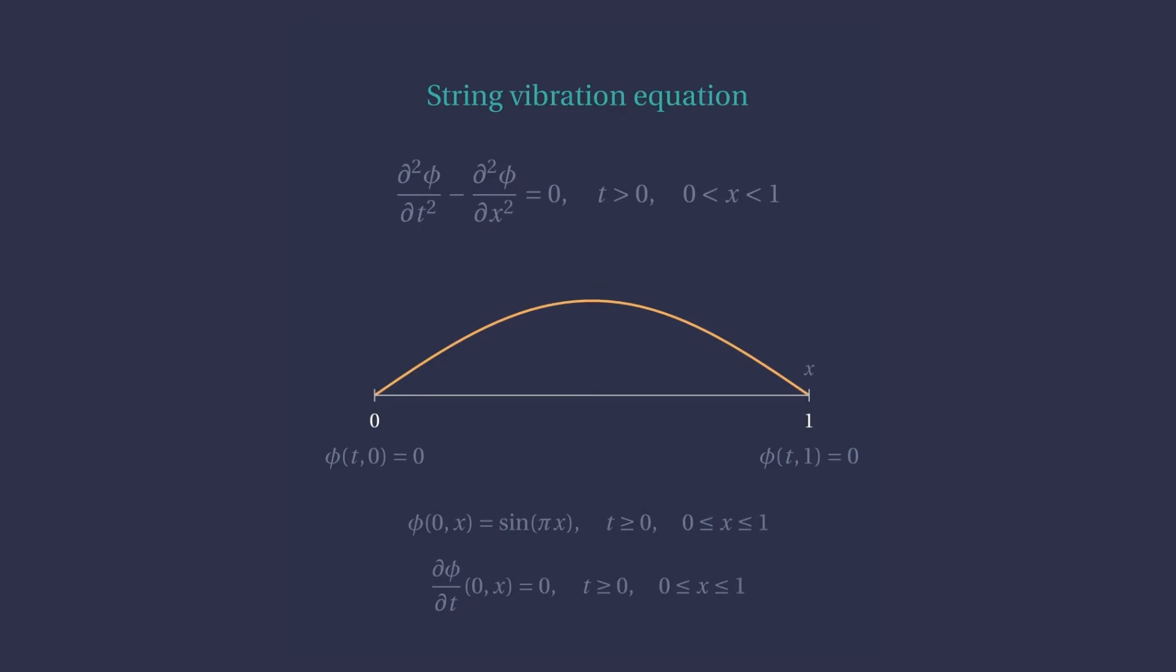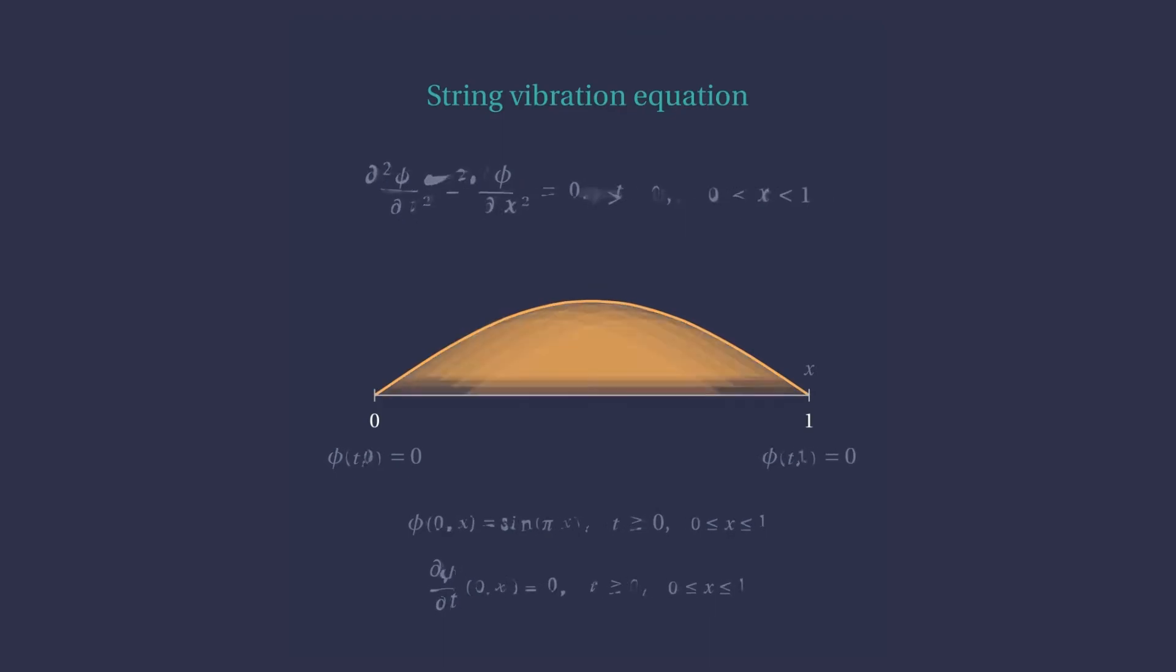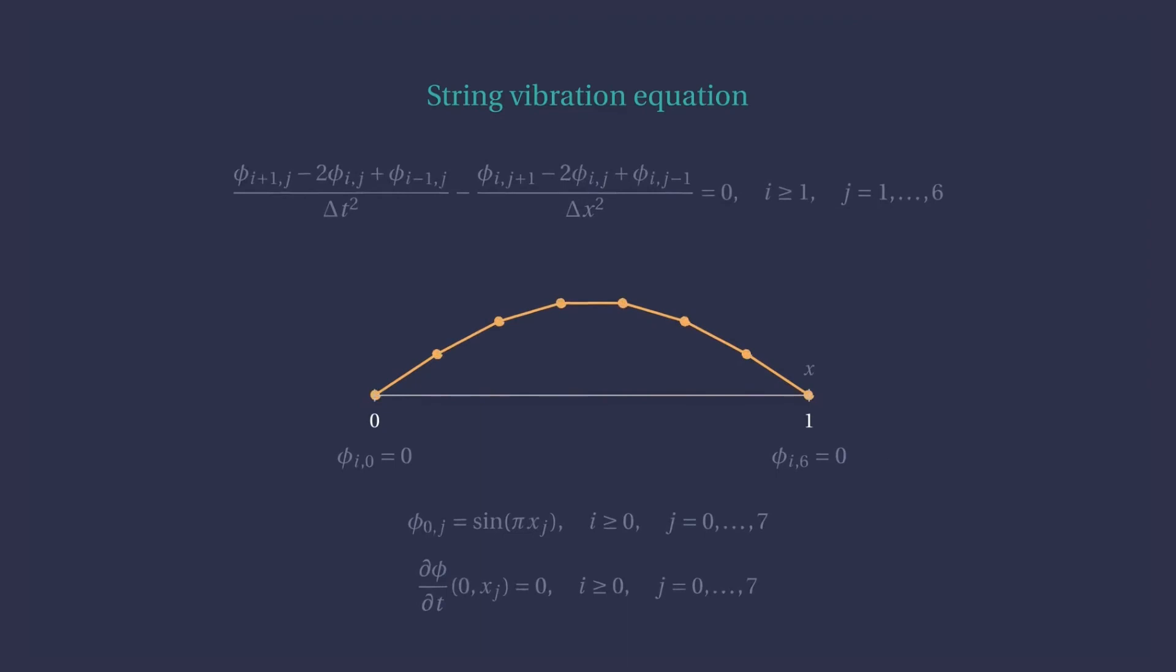Just as before, we can try to apply the most accurate finite difference formulas we have available to discretize this differential equation and see if it sticks. So, we apply the central difference formulas for both second order derivatives centered at time instance i and spatial node j. Well, did we bite more than we can chew? Let's see. Let's look at the time instance we need.